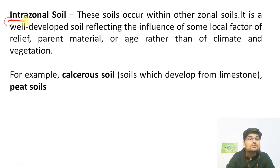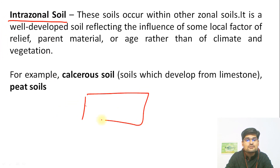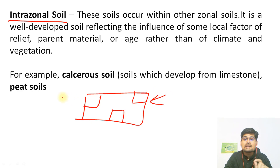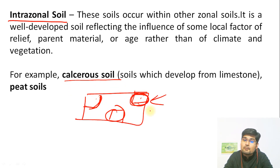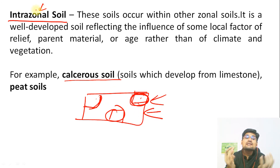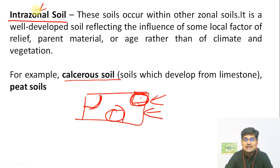Then there is something called intrazonal soil. The prefix 'intra' means within — so within a zone there is variation. It is part of the same zone but with pockets of variation due to some change in local factors like parent material or vegetation. For example, if somewhere you have more calcareous (limestone-containing) soil or peaty/marshy soil in the same region but different from the surrounding — that is intrazonal. Between zones ('inter') is azonal soil, while within the same zone it is intrazonal.